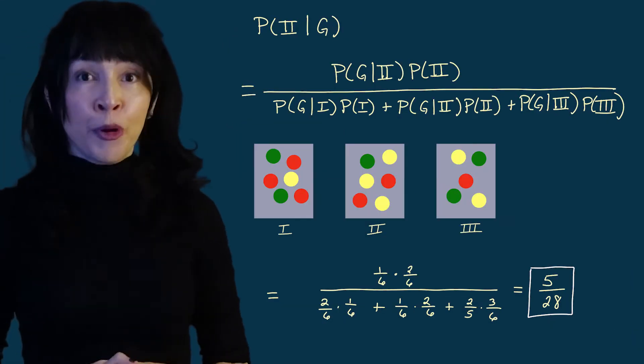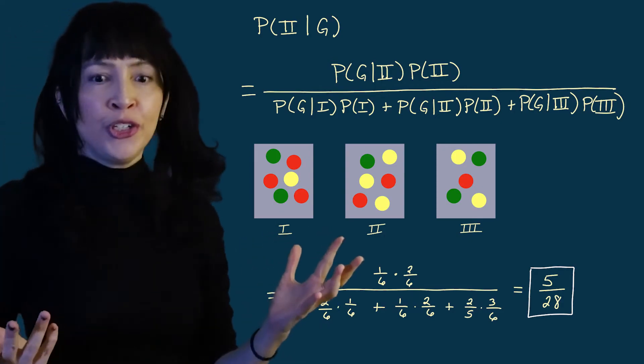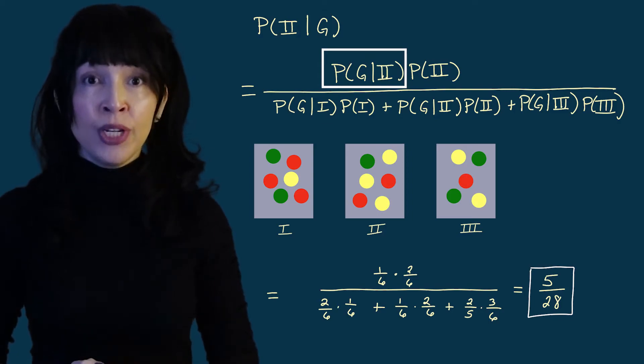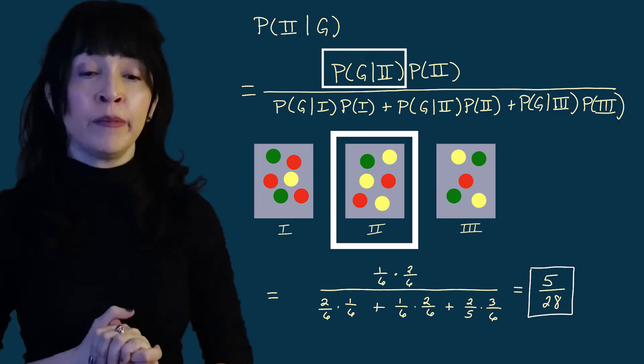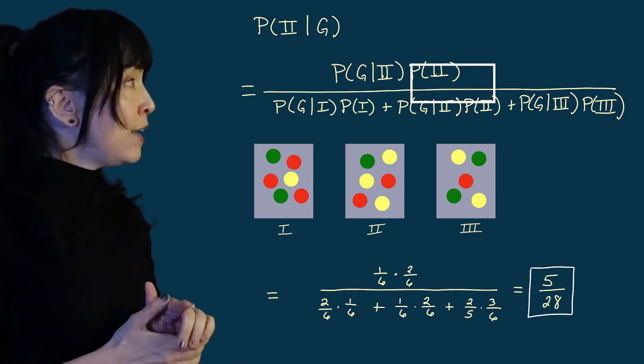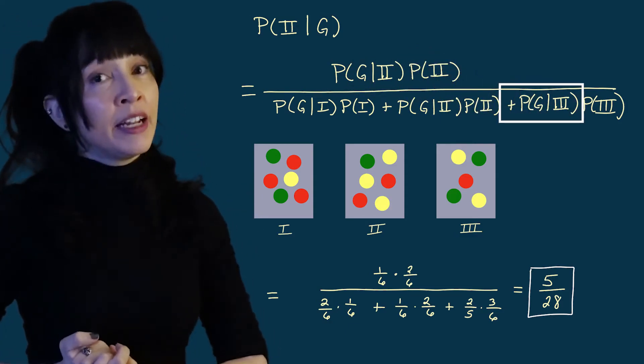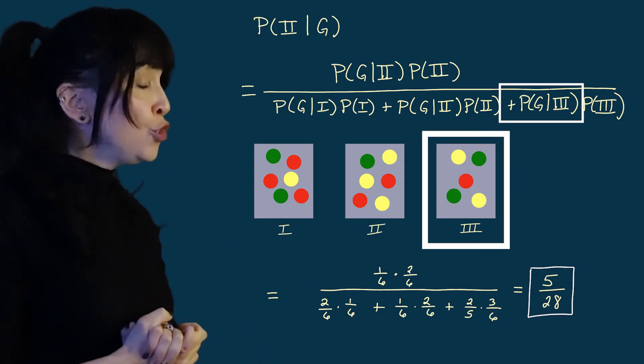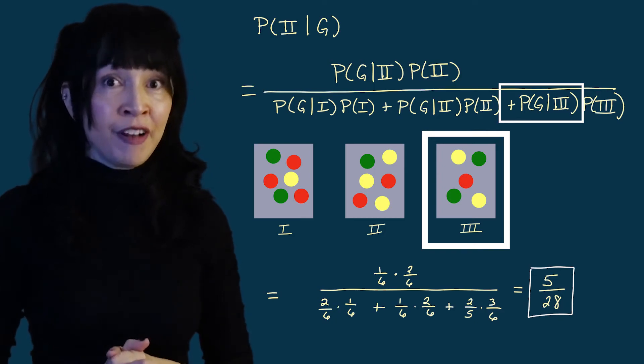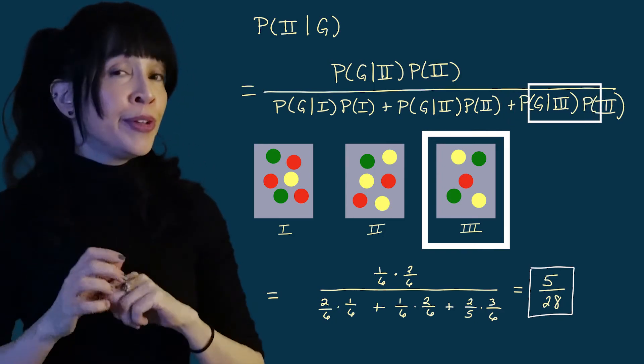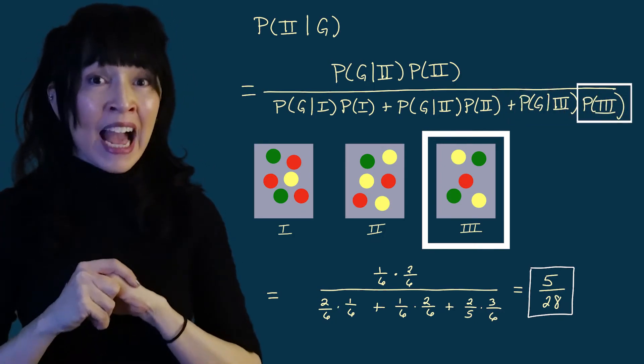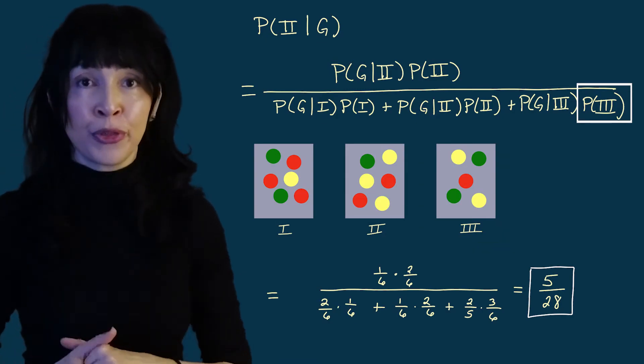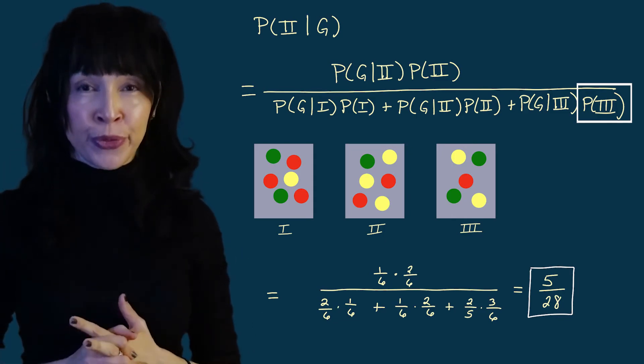Now in our particular problem, I know all these numbers. I'm just going to go over two of them. The probability I get a green given I chose from box two is one sixth because there's six balls there and one of them is green. Let me go down here to this last term on the bottom. The probability of getting a green given that I chose from box three, that one is two out of five because there's two green balls and a total of five. And the probability I chose from box three is three out of six because that happens when I roll the die and I see four, five or six. So that's three outcomes out of the total of six outcomes.